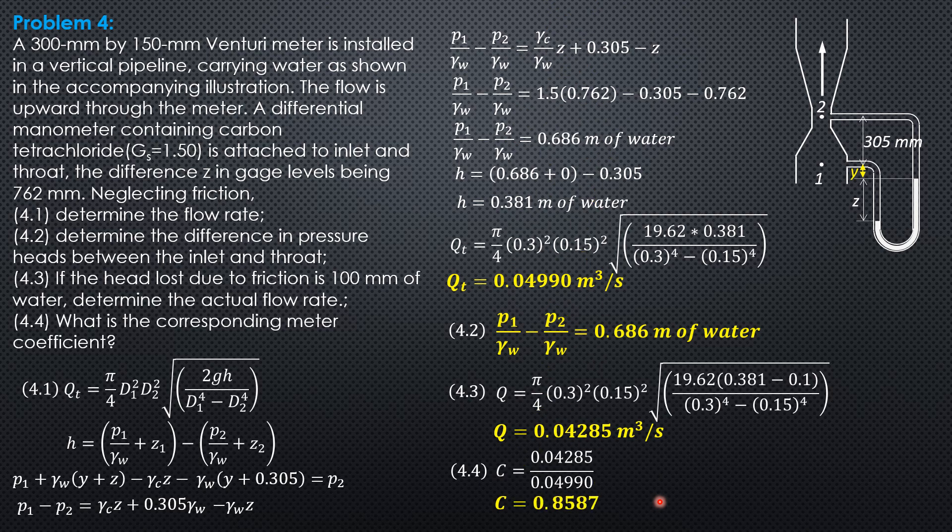And C is 0.8587. So I want you to verify this value by using the other formula: square root of 0.381 minus 0.1 over 0.381. And that's the other way. Thank you.